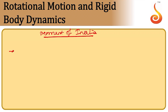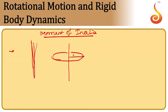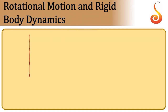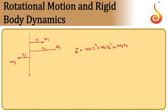For a point mass at distance r from the axis, moment of inertia is mr². For a system of particles — m1 at distance r1, m2 at r2, m3 at r3, etc. — the moment of inertia is m1r1² + m2r2² + m3r3² + etc. This is the moment of inertia of a system of discrete particles.